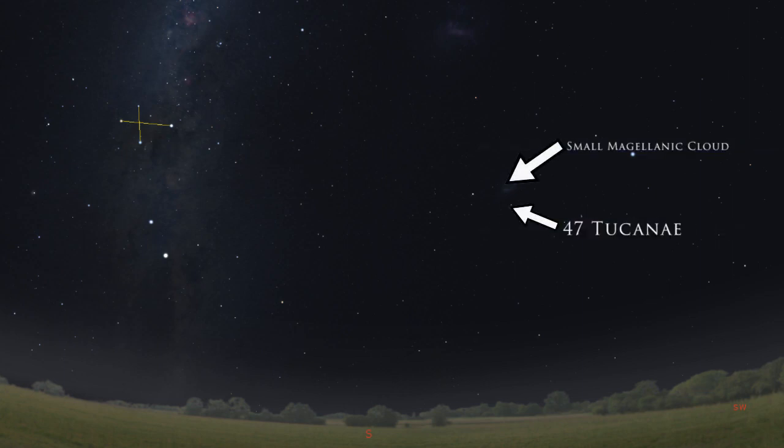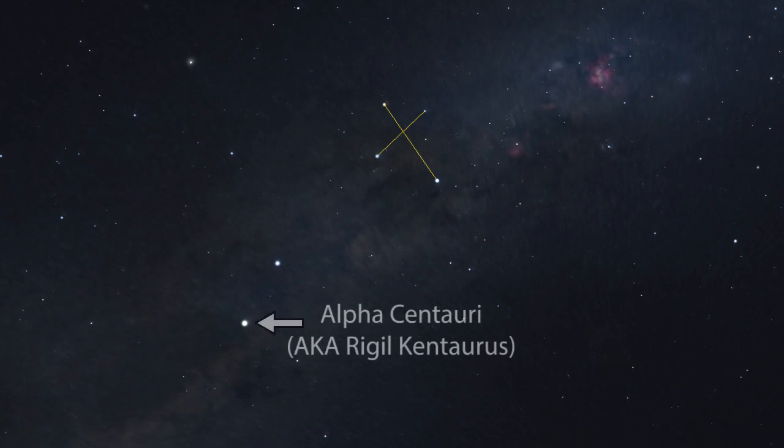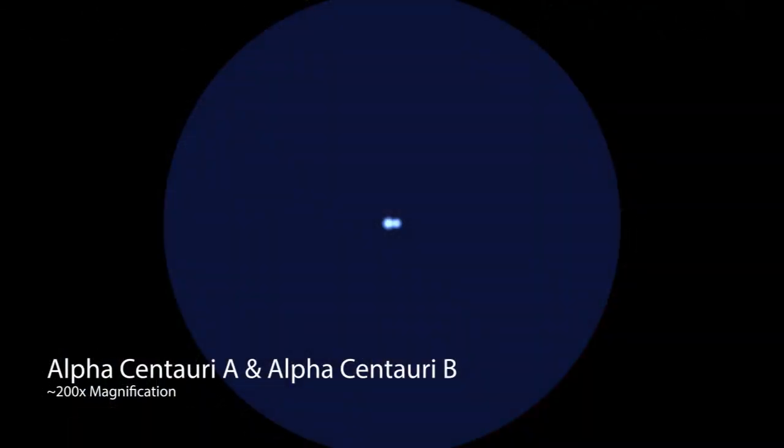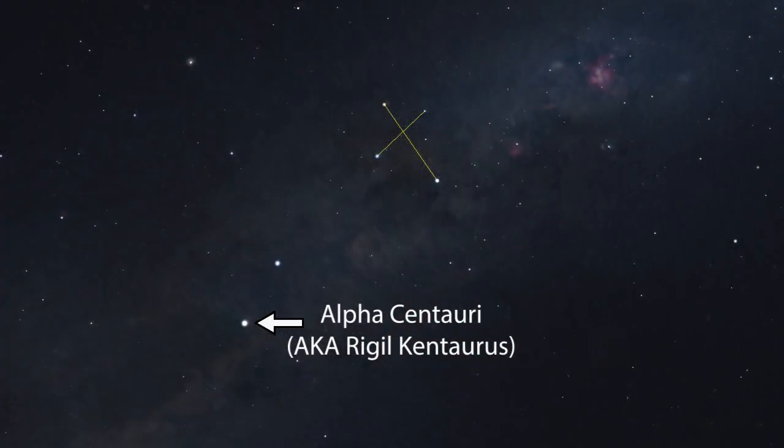And finally, here's one you can't miss. The third brightest star in the sky and the closest star system to Earth, Alpha Centauri. Through a telescope, this star is a beautiful double star. Alpha Centauri is near the southern cross, and it's very bright. If you're in the southern hemisphere, you can't miss it.